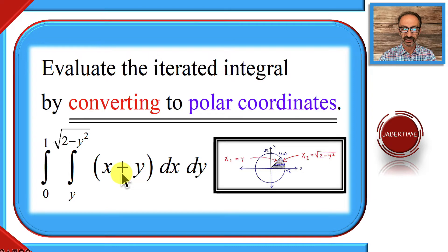We're just going to have to use polar form because of that nature right here: square root of 2 minus y squared. Let's get started.